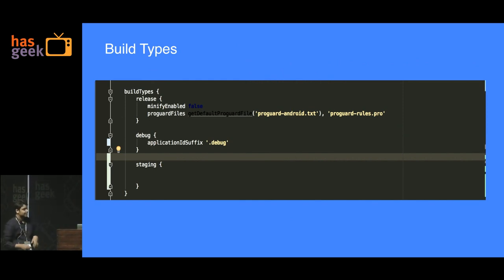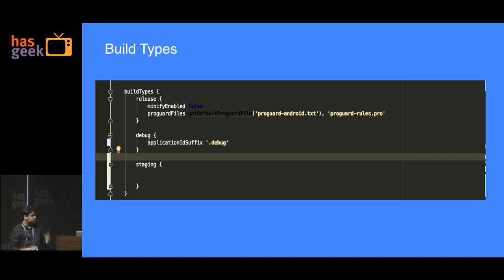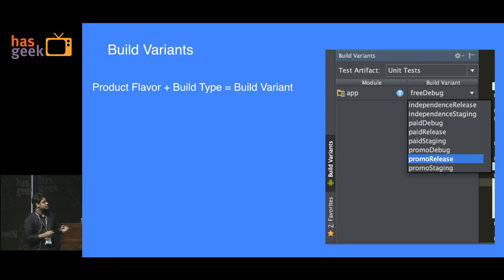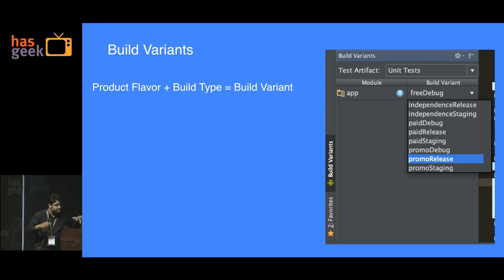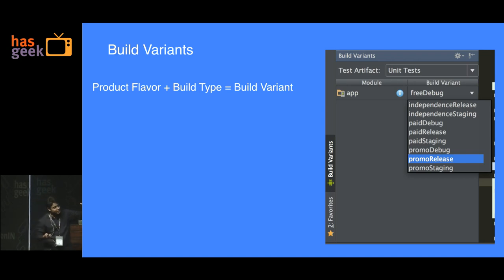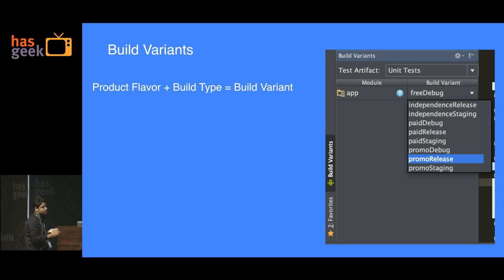Build types are an extension to what we just spoke about. You could have a release build, a debug build, or a staging build, and you can change the package name suffix from here. A variant is what comes out from a combination of flavor and build type. So with three flavors and three build types, you get combinations like promo debug, promo release, promo staging, paid release, paid debug, and paid staging. You select whichever you want and compile that particular APK.